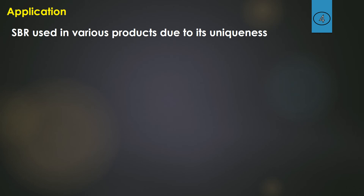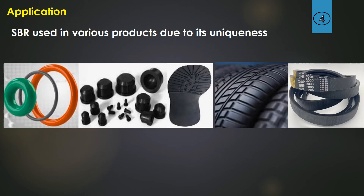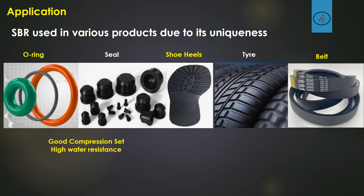Now let us understand the applications of SBR. SBR is used in various products due to its uniqueness. Examples include o-rings, seals, shoe heels, tires, and belts. The qualities of good abrasion resistance and high water resistance are the reasons it is used in o-rings and seals. For tires, shoe heels, and belts, its good abrasion resistance makes it suitable, and it is one of the highest-volume materials used for tire manufacturing.